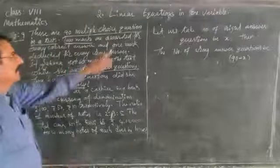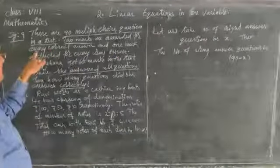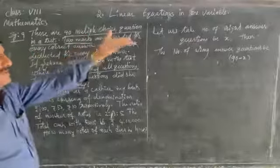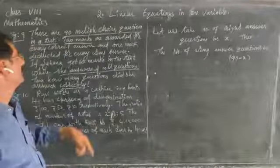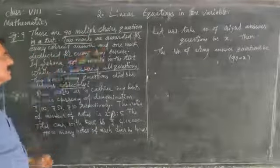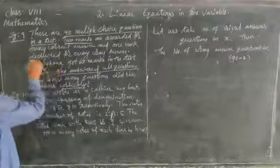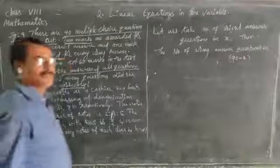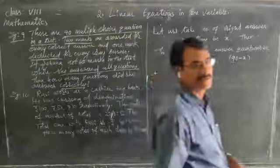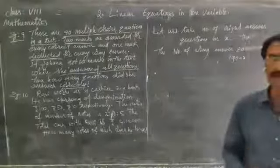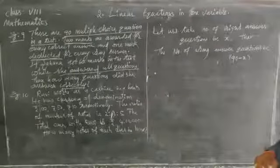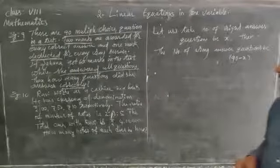I have let x stand for correct answer questions — either 'right' or 'correct,' anyone. And 'deducted' means subtract: 1 mark is deducted for every wrong answer question.